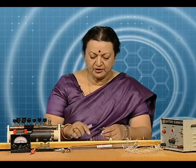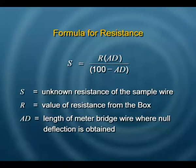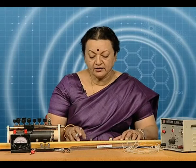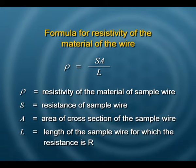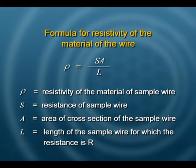The formula required is: the resistance of the wire S equals R multiplied by AD divided by (100 minus AD), where R is the resistance taken from the resistance box and AD is the balance length on the meter bridge wire. The second formula for specific resistance is derived from R = ρL/A, giving ρ = S·A/L, where S is the calculated resistance, A is the area of cross section, and L is the length of the wire selected.